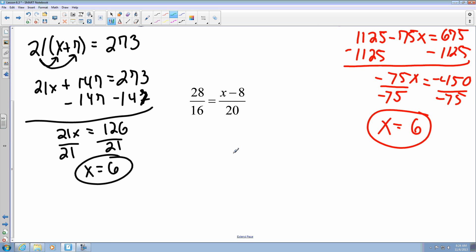Last example on this page. Again, we're going to use cross product. So I've got 16 multiplied by x minus 8 equals 28 times 20, which gives me 560. Distributive property here. 16x minus 16 times 8, which is 128 equals 560.